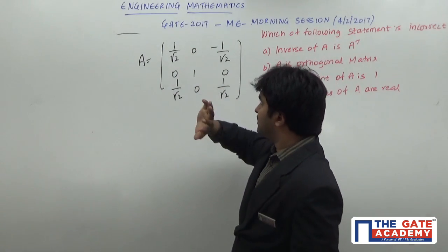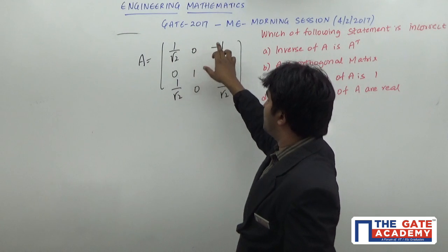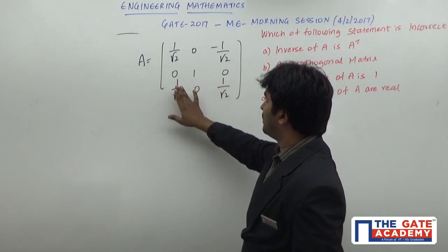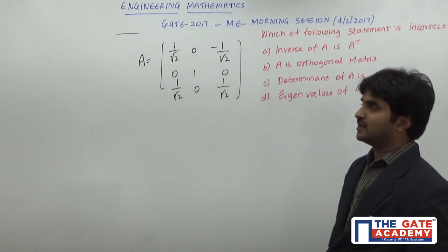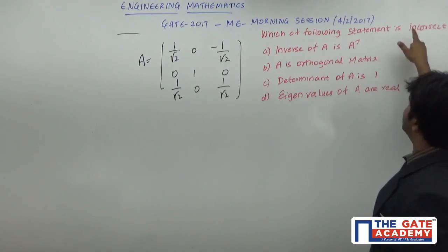The given matrix A is: [1/√2, 0, -1/√2; 0, 1, 0; 1/√2, 0, 1/√2]. Which of the following statements is incorrect?